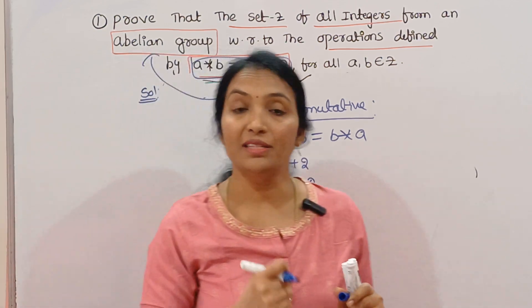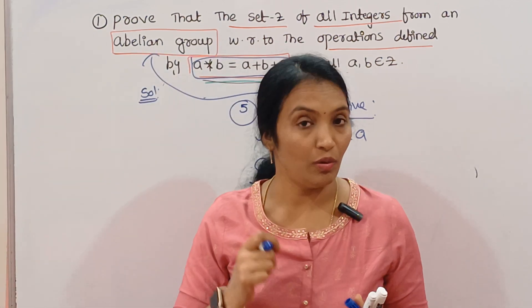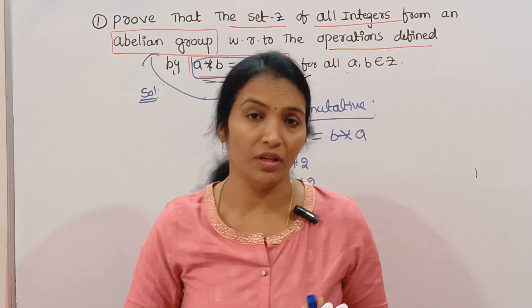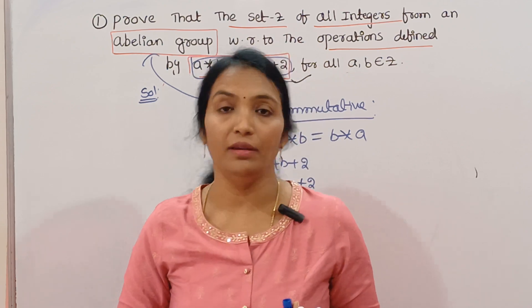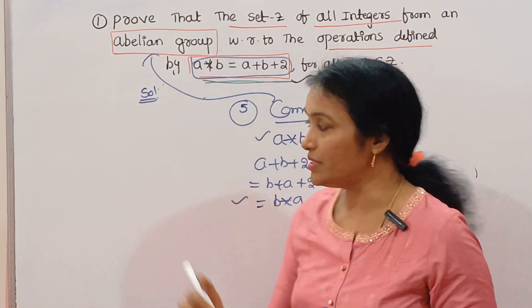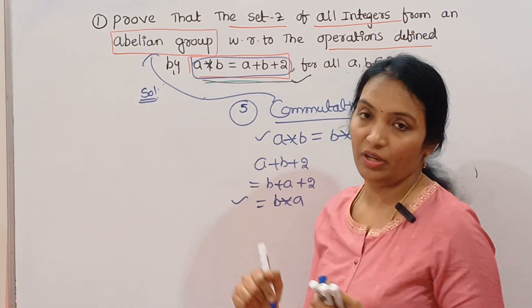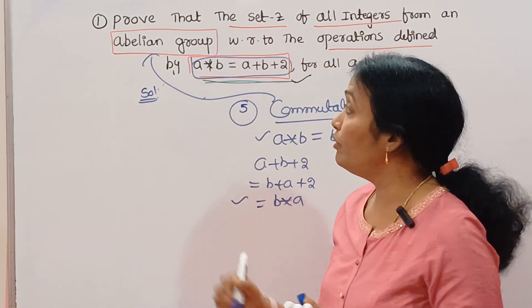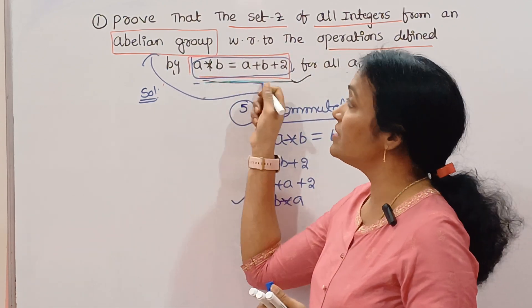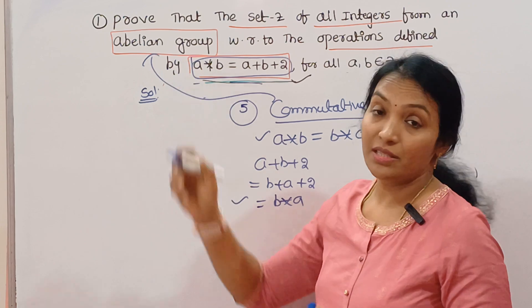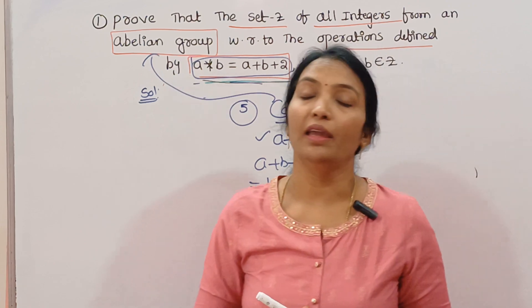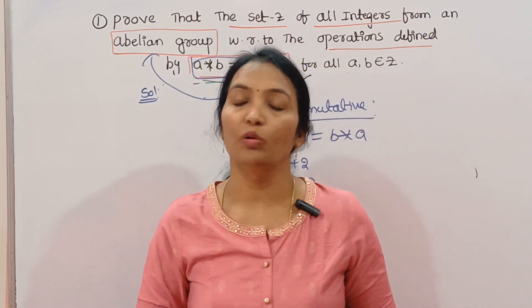Therefore it satisfies closure, associative, identity, inverse, and commutative. Therefore, the given set Z under the operation A star B equals A plus B plus 2 is an abelian group.